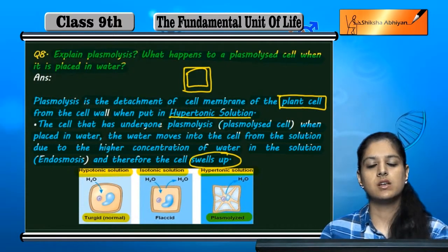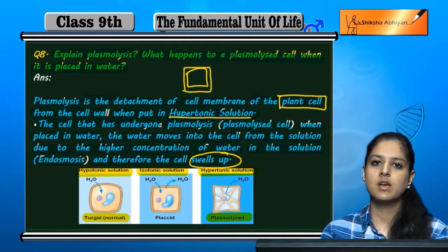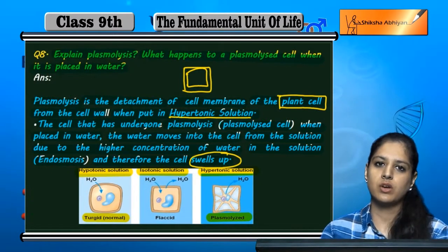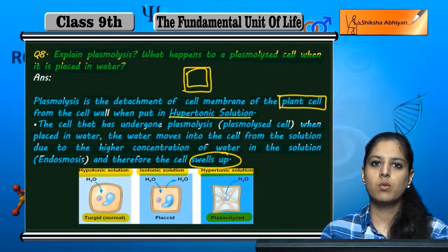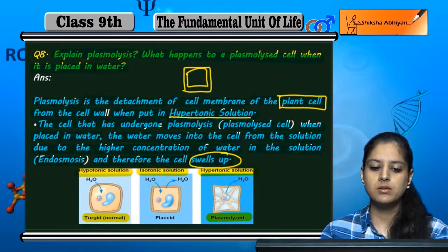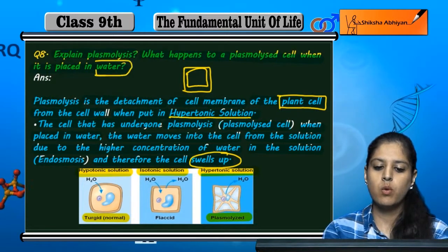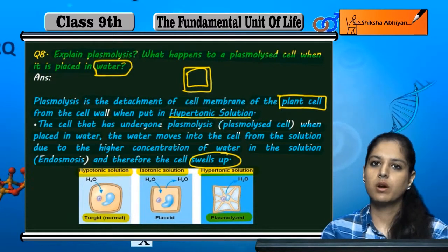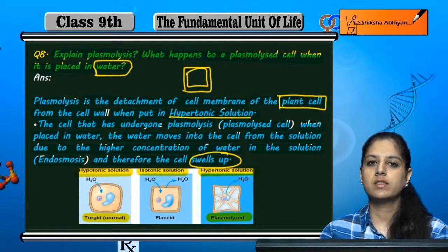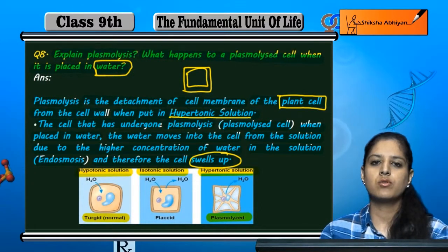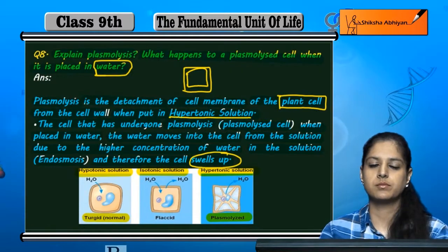This is a plasmolyzed cell which has already undergone plasmolysis. If we place it in water, the water concentration outside is higher, so water goes into the cell and the cell becomes swollen.